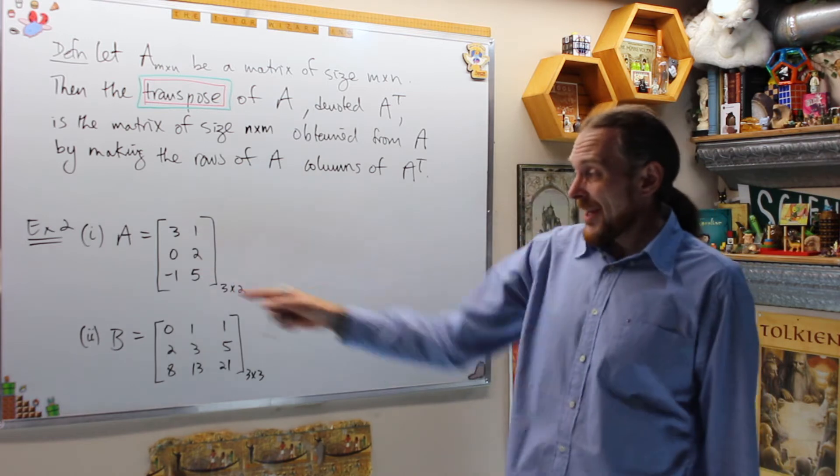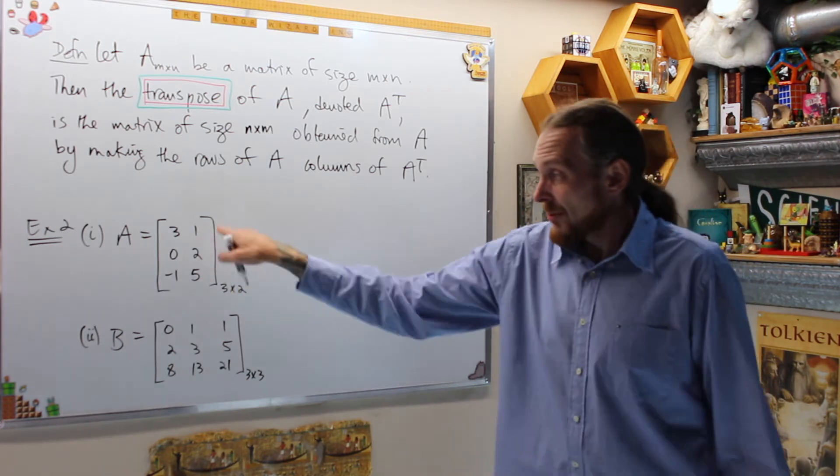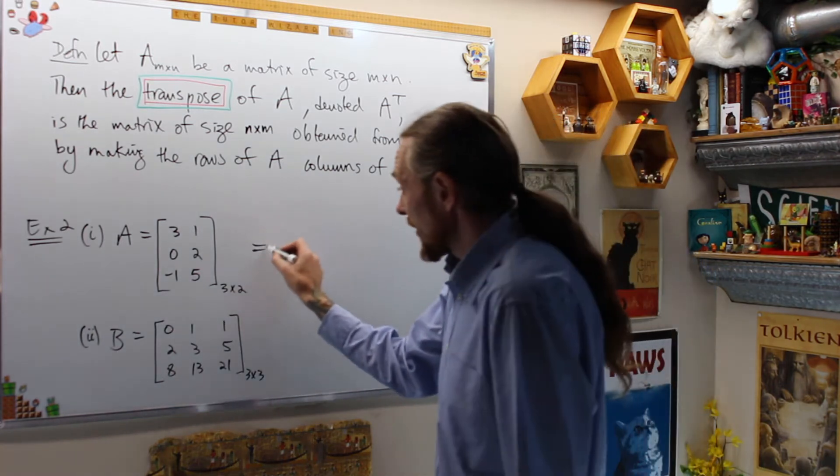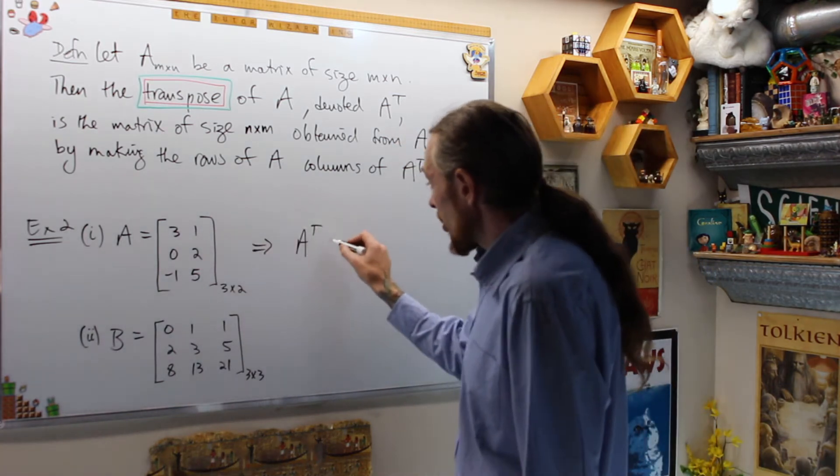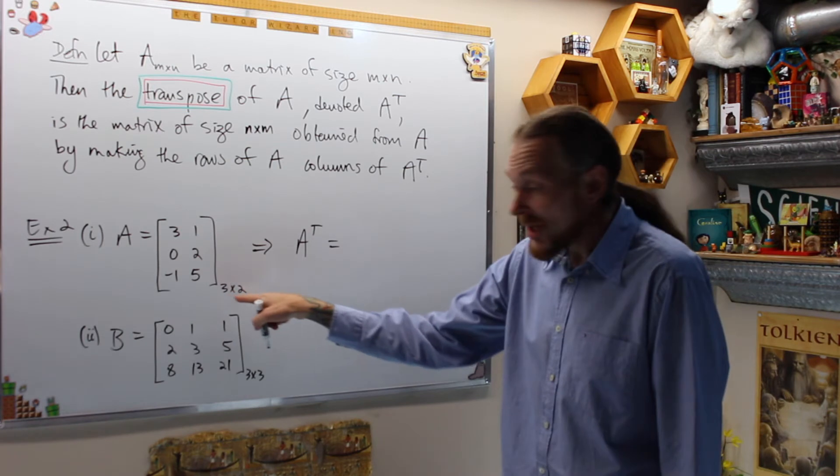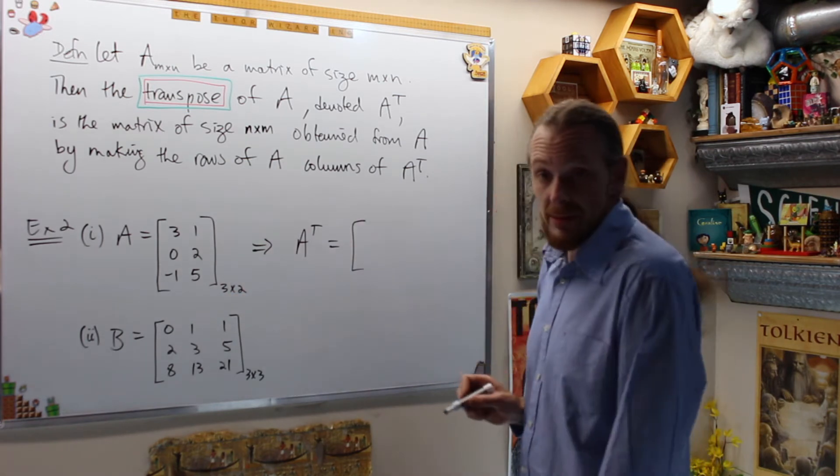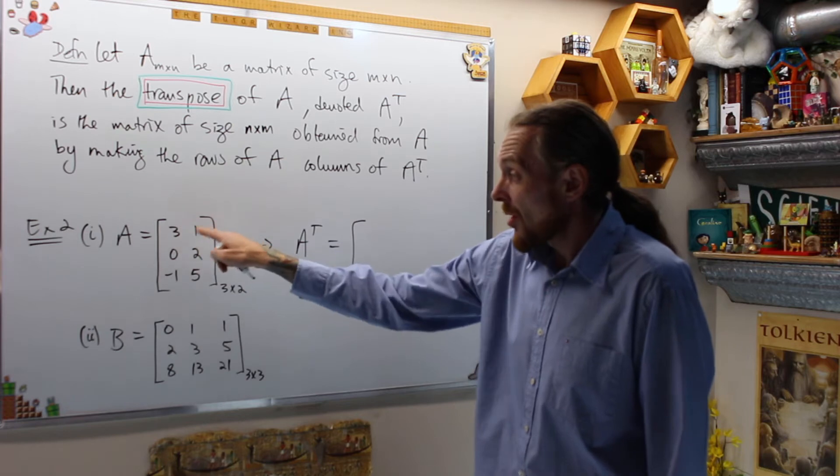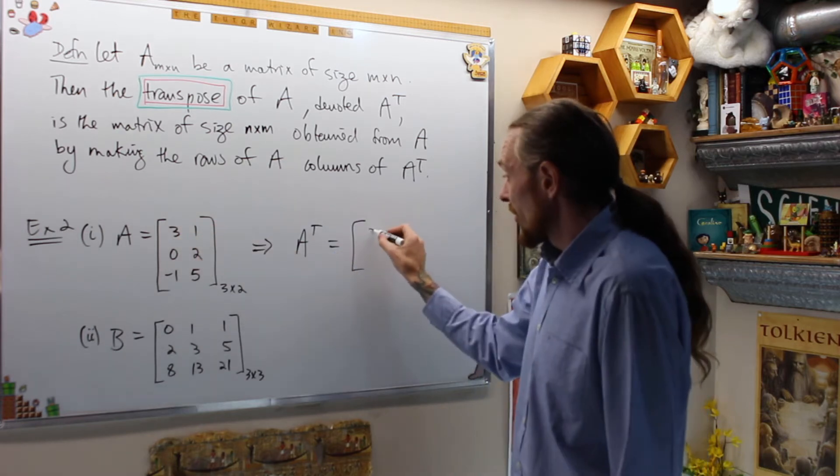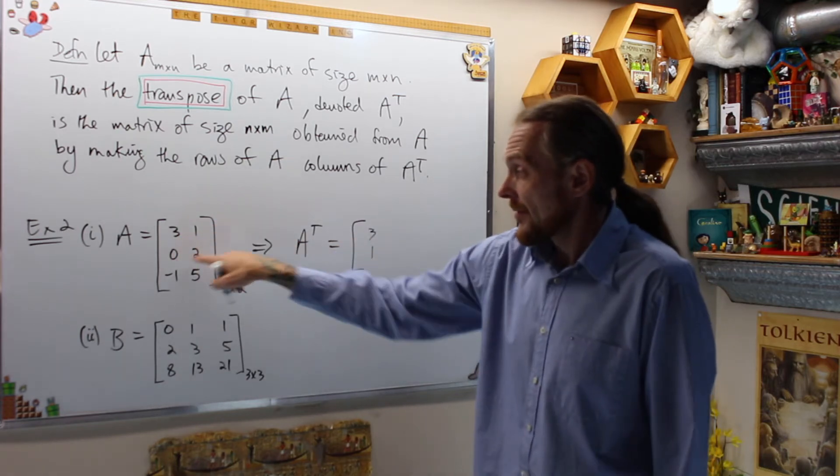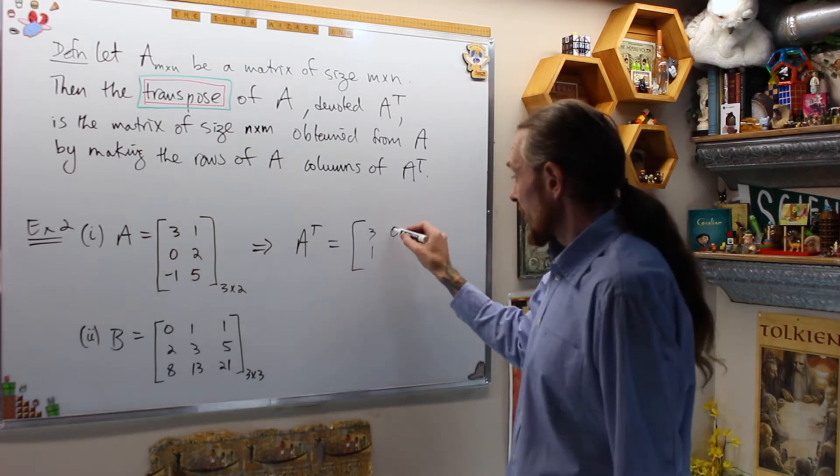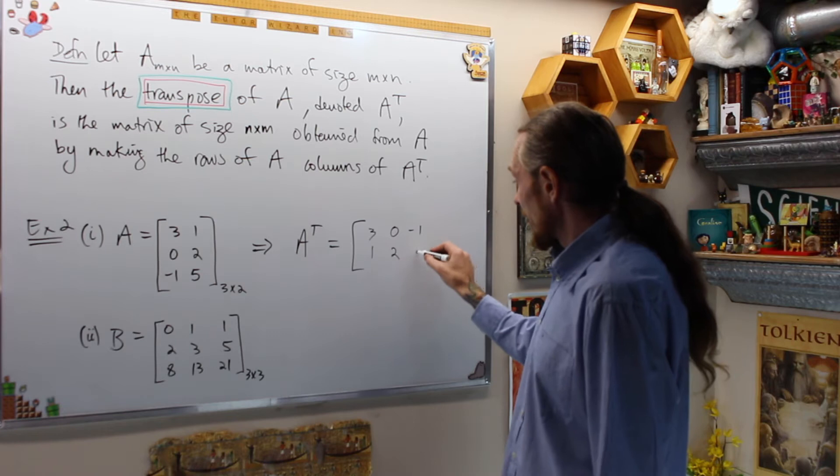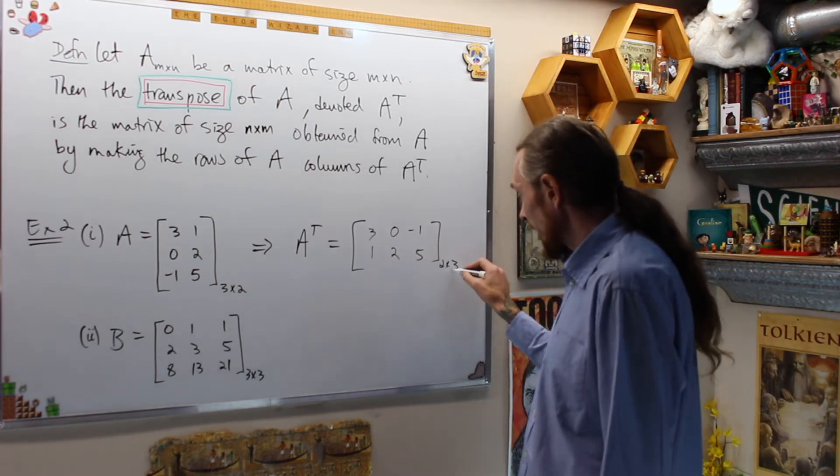If A is this matrix, this is a 3 by 2 matrix, 3 rows and 2 columns. What we do with this then is A transpose is the 2 by 3 matrix so it's going to have two rows and 3 columns obtained from A by making the rows columns. So this row becomes a column, 3, 1. This row becomes the next column, 0, 2 and this row becomes the next column, negative 1, 5 and this is 2 by 3.